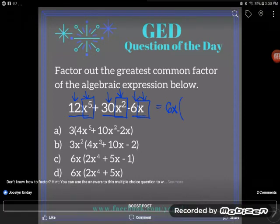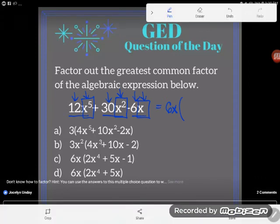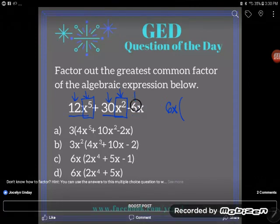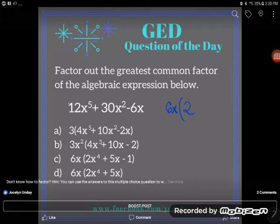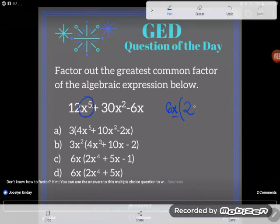And now we would actually do the division. We're going to take that 6x out of each one of those three terms. Let's give it a try. So 12 divided by six of course would be two. If I had five x's but I divided one out, I would have four x's left.